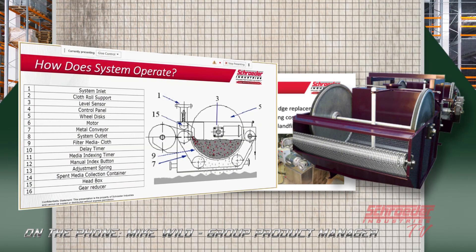Looking at the system, the operation is very simple. On the left side, next to number 15 below that is where the roll of media would go. It's fed through the system by a conveyor belt on the bottom. Number five, the wheel disc, has a rubber edge to it — this compresses the media against the conveyor and increments it along. Water is fed from the top or from the side, comes into a header box which slows down the velocity of the water and distributes it across the length of the media.